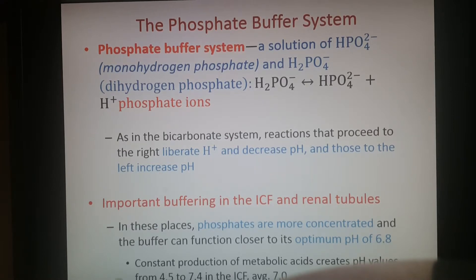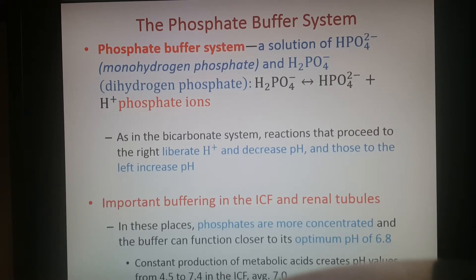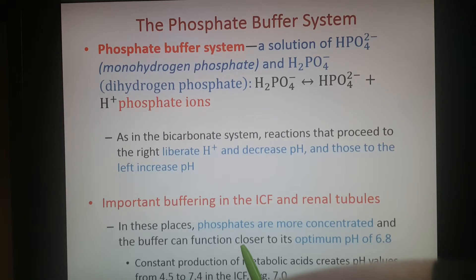The phosphate buffer system is important for buffering in your intracellular fluid as well as in your renal tubules — inside the nephrons of your kidneys — where more phosphates are concentrated. The optimal pH there is slightly acidic, so using those phosphates helps balance and buffer the pH in those systems.